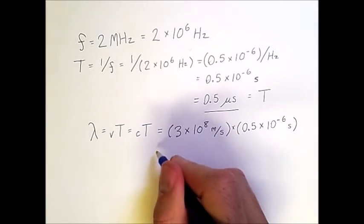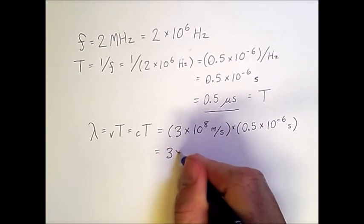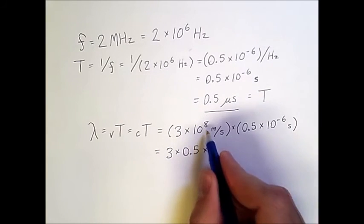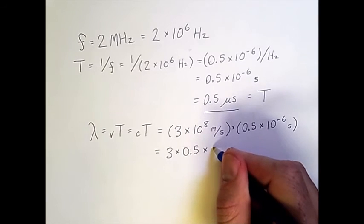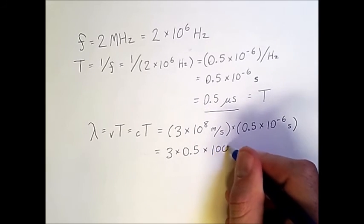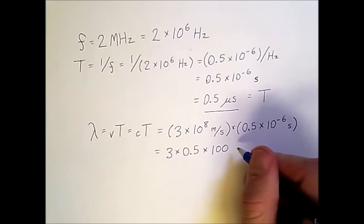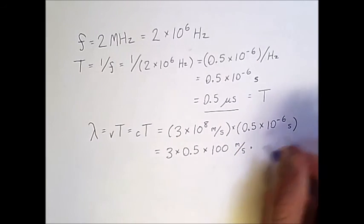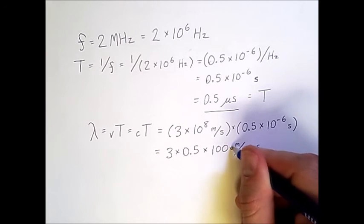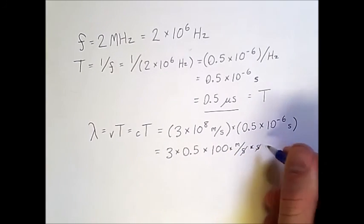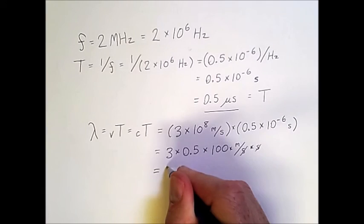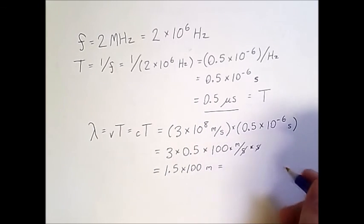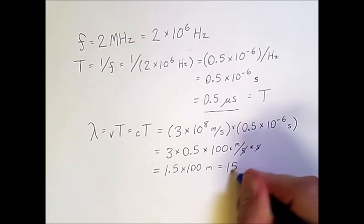So if we multiply this out, we get 3 times 0.5 times, and then the 10 to the 8 and the 10 to the minus 6 come down to just 100. And the units that we're left with are meters over seconds times the one second. So these s's will cancel out, and we'll simply have 1.5 times 100 meters, which is equal to 150 meters.